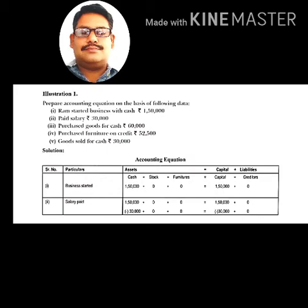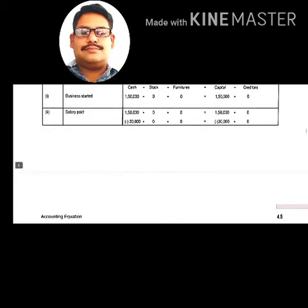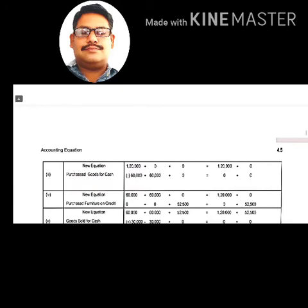Purchase of goods for cash ₹60,000: cash decreases by ₹60,000 (now ₹60,000). Stock increases by ₹60,000. Total assets remain ₹1,20,000. Capital remains ₹1,20,000 — equation is balanced.